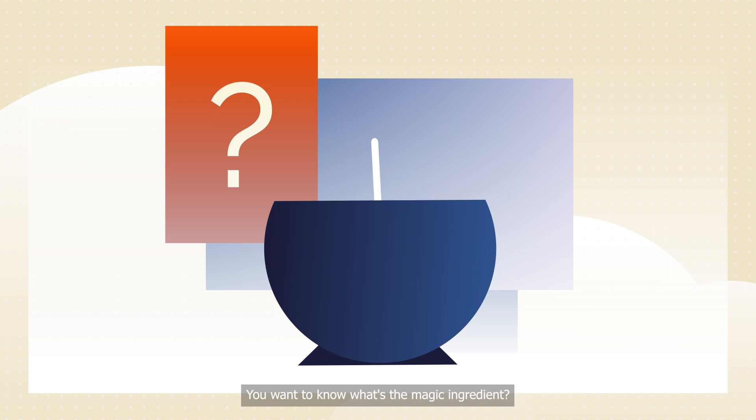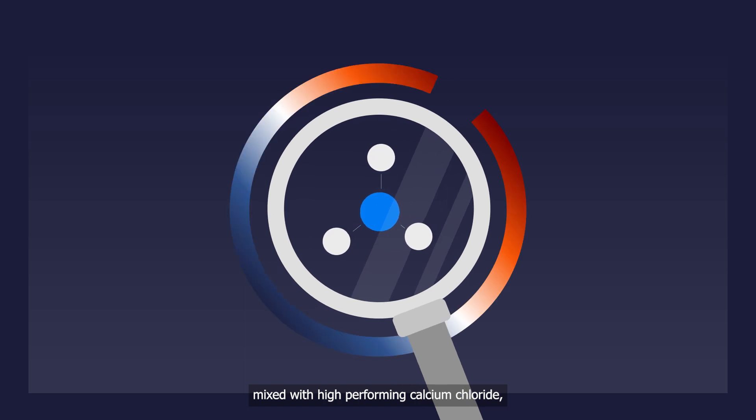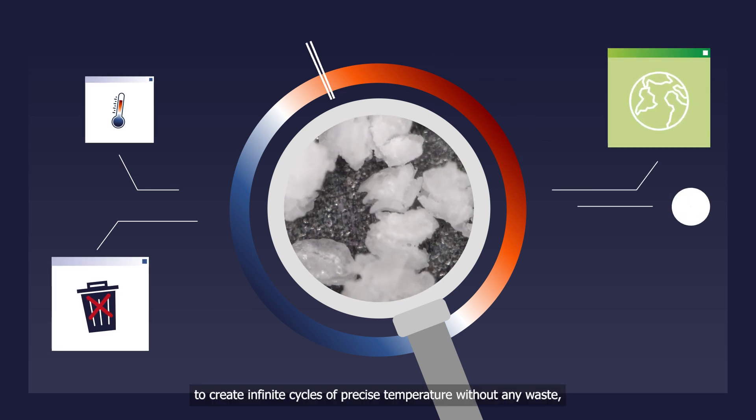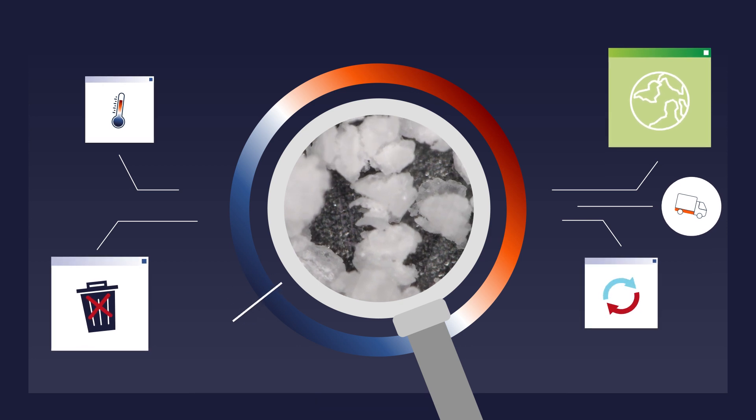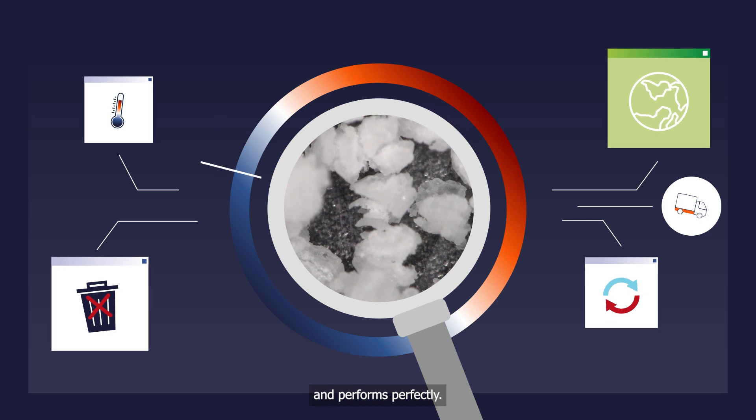You want to know what's the magic ingredient? Ammonia. Mixed with high-performing calcium chloride, ammonia is a fantastic molecule and a natural thermal material to create infinite cycles of precise temperature without any waste. Entirely manageable, totally decarbonated, highly mobile, and performs perfectly.